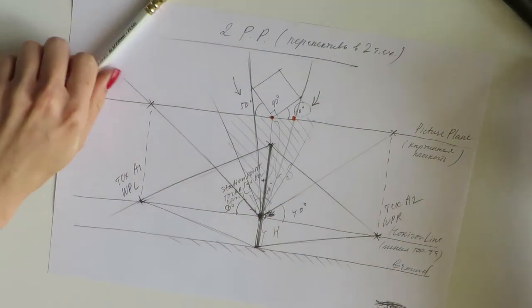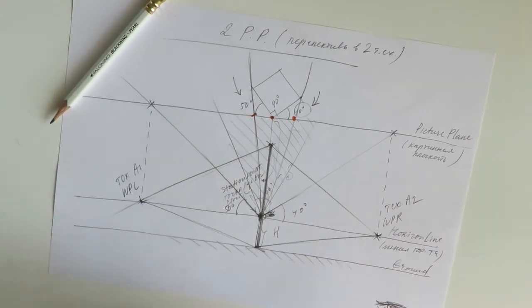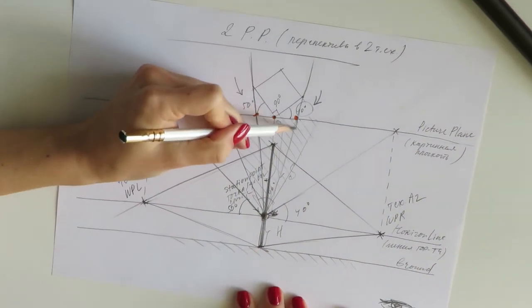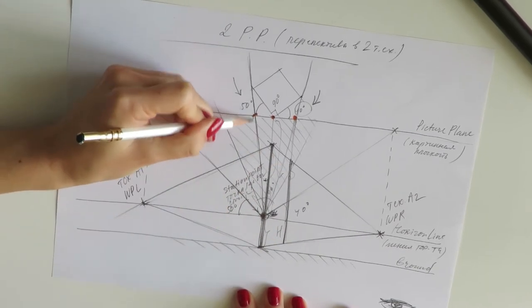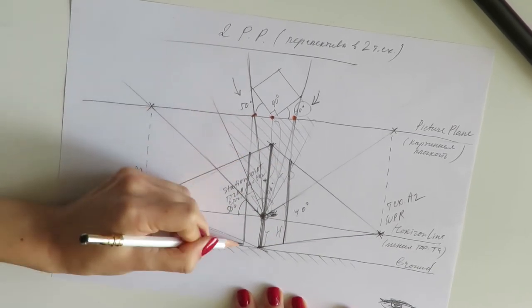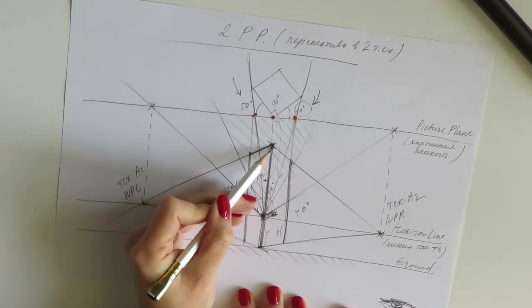The same thing here for this corner. You draw a line from the station point up to that corner. Where it intersects the picture plane, you draw the line straight down, and that gives you that side of that building.